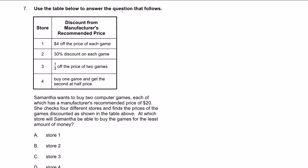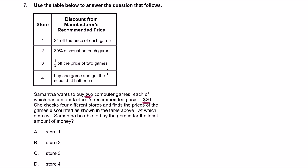Use the table below to answer the question that follows. OK, let's see. They have a store, different stores. Discount for manufacturer's recommended price. OK, there we go. So they're all discounting games. Samantha wants to buy two computer games, each of which has a manufacturer's recommended price of $20. She checks four different stores and finds the prices of the games discounted as shown in the table above. At which store will Samantha be able to buy the games for the least amount of money? That makes sense. You want to find the cheapest place.